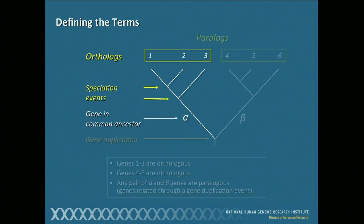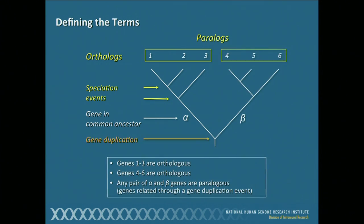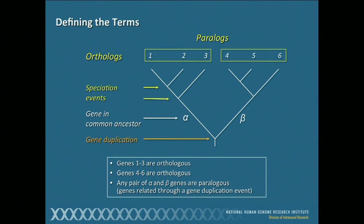If we roll the clock back and consider what happens when you have a gene duplication event prior to alpha, some event happened giving rise to both alpha and beta. In the same way that the lineage on the left evolved over time, the lineage on the right evolved over time somewhat differently. Genes one, two, and three are orthologous because they all arose from common ancestor A. Genes four, five, and six are orthologous to one another because they all arose from ancestor B. But any pair of genes that arose from alpha or from beta are paralogs of one another — they're related through a gene duplication event.